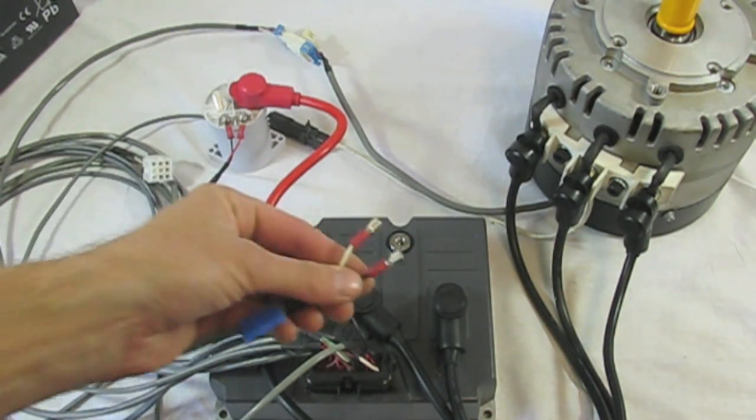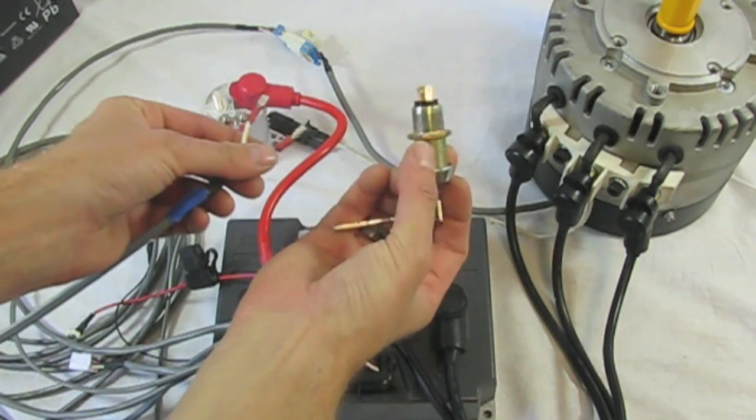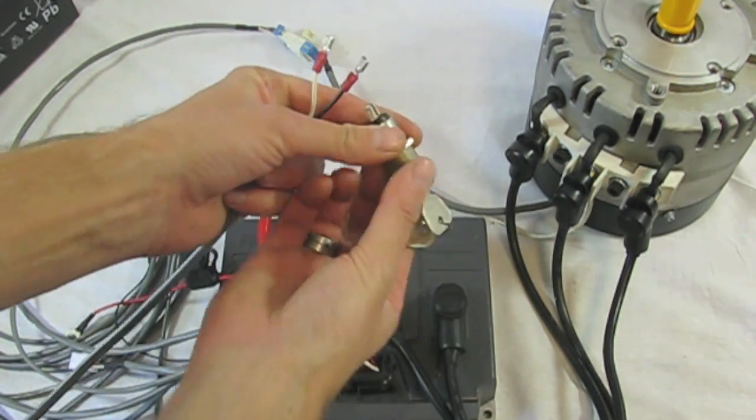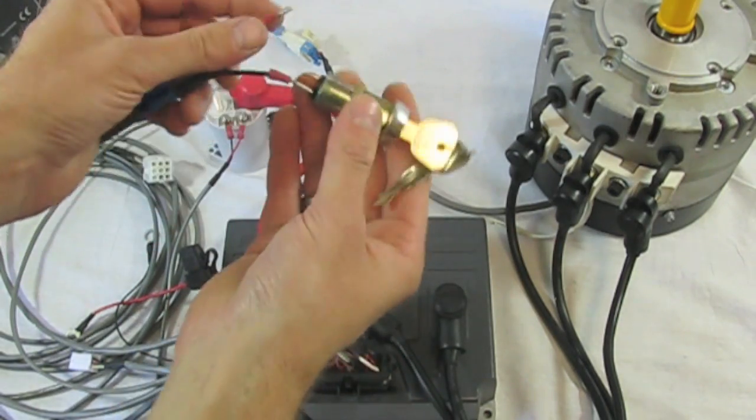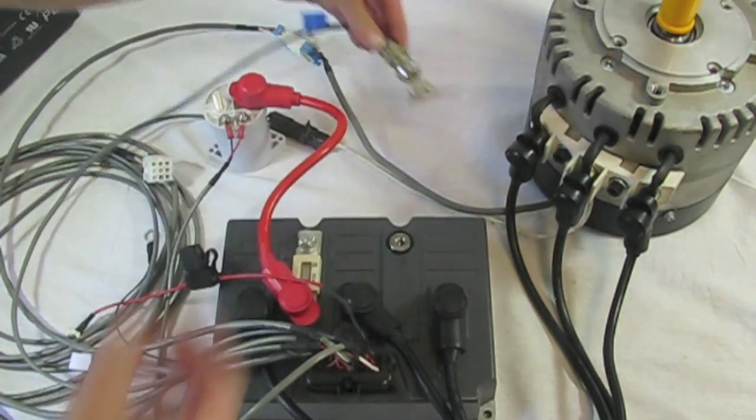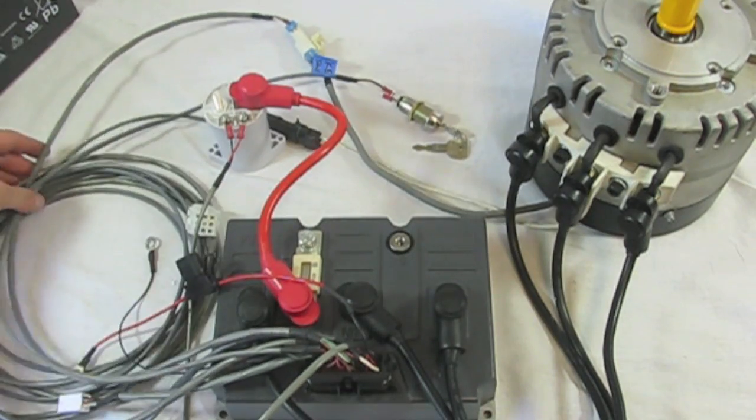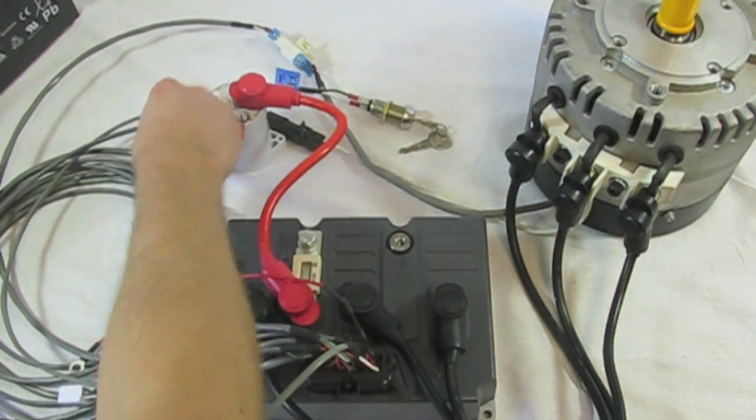We'll get to the other side of the contactor in a moment but first is the key switch with the two spade terminals. These are also not polarity sensitive so either orientation is fine just make sure they're nice and snug and also check to make sure the key switch is off which is counterclockwise.